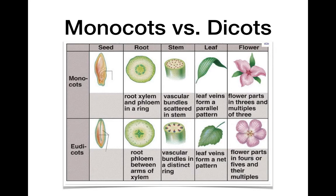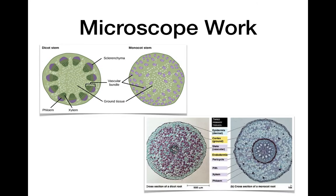Monocot leaves have parallel veins, whereas dicot leaves have a net-like venation pattern. Monocot flowers tend to have petals in multiples of three — so three, six, or nine petals — whereas dicots tend to have petals in fours and fives, so maybe five, ten, fifteen, or eight, twelve. Those are the key differences between monocots and dicots, which will help you with the next task.